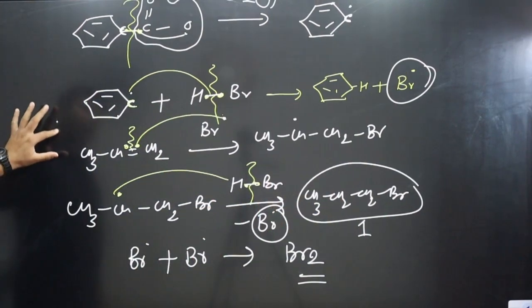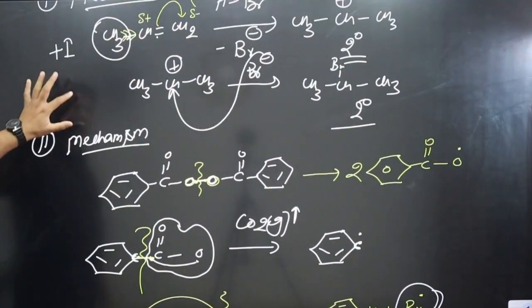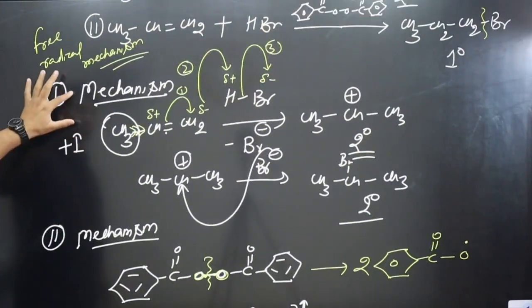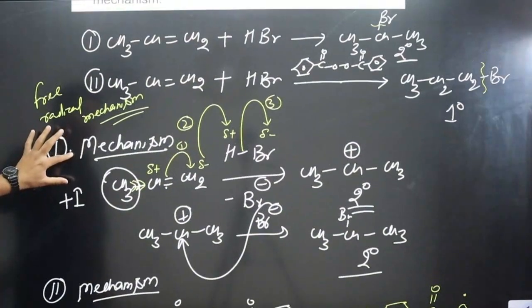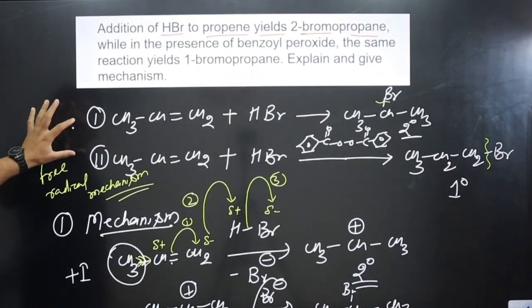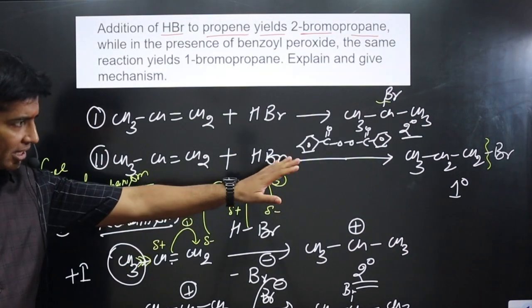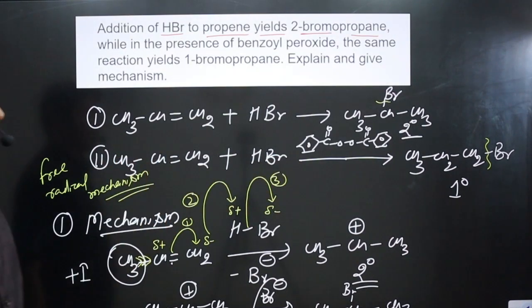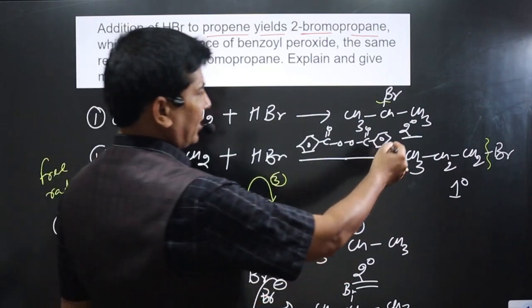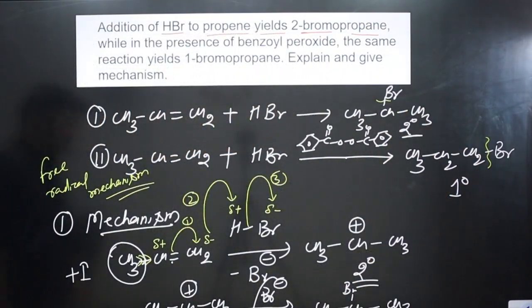In summary: in the first reaction we form a stable secondary carbocation and then get the product 2-bromopropane (Markovnikov). In the second reaction, with benzoyl peroxide, the reaction takes place via free radical mechanism and we get 1-bromopropane (anti-Markovnikov). In the first case we get the more stable product; in the second case the less stable product.